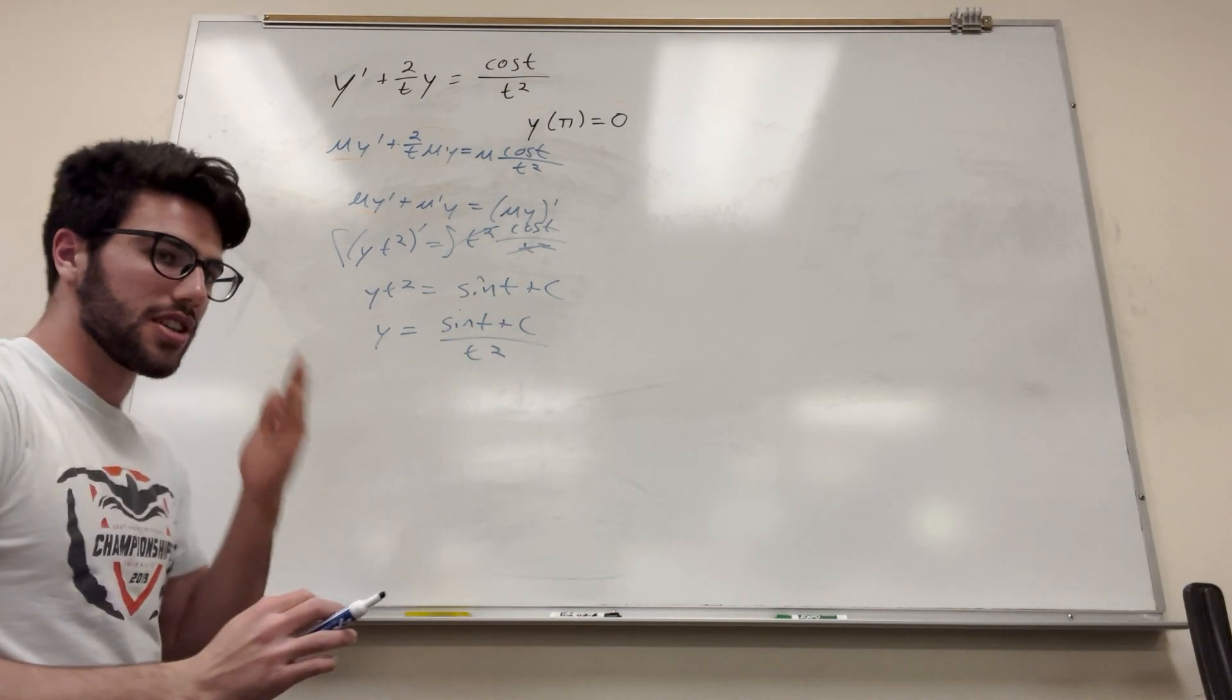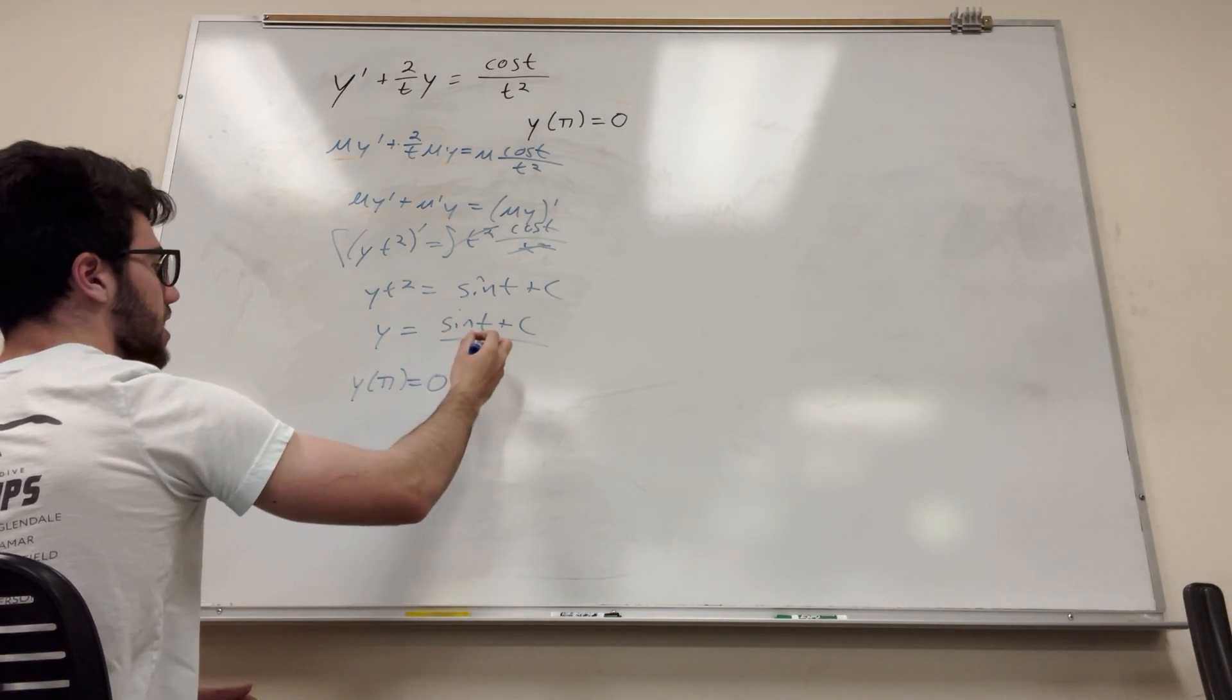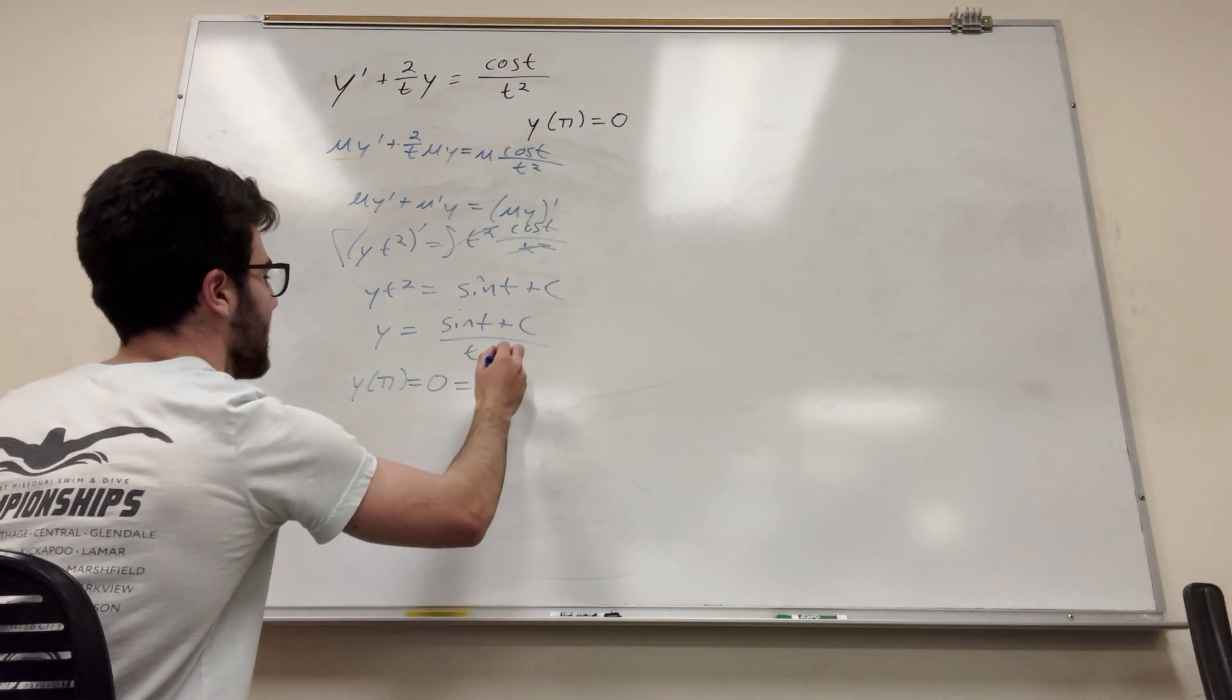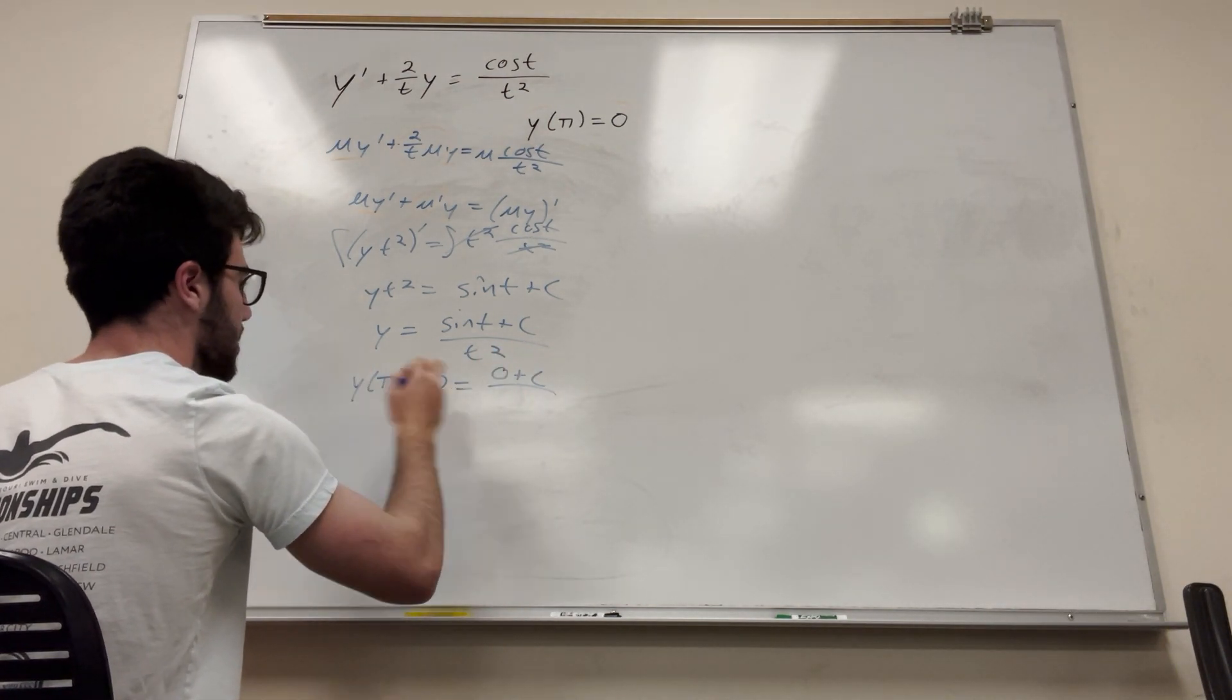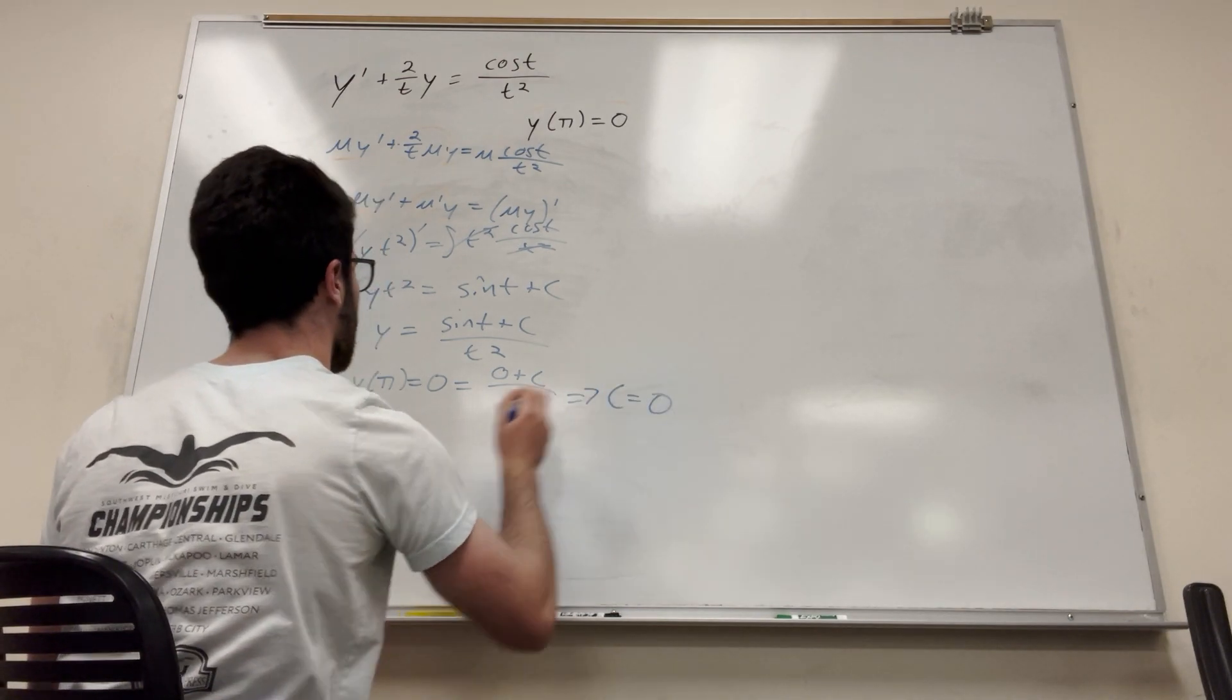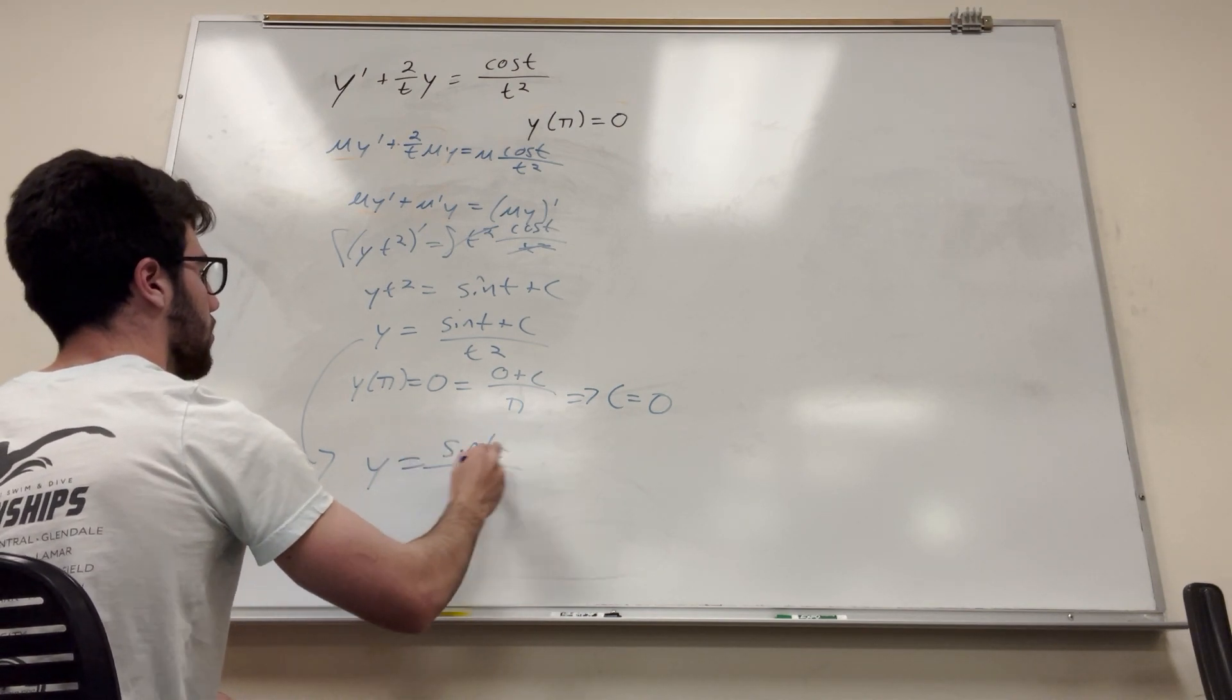Now let's plug in our initial condition, make it work. So we have y of pi is equal to zero. So if you plug in pi to this, sine of pi is going to be equal to zero. Zero plus c over t squared. What is zero? Or what is t? So that's pi. So obviously to make this equation work, c is just going to be equal to zero. Then we can just go back to this equation with c is equal to zero. Y is equal to sine of t over t squared.